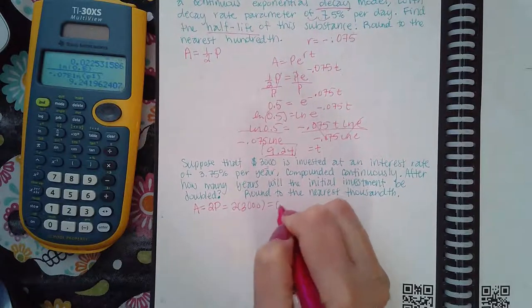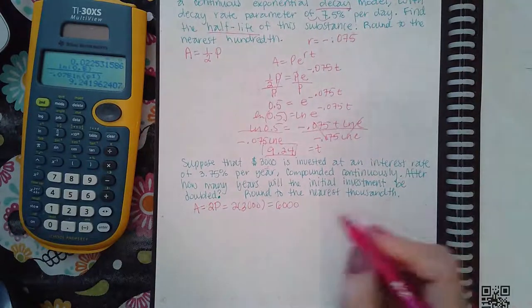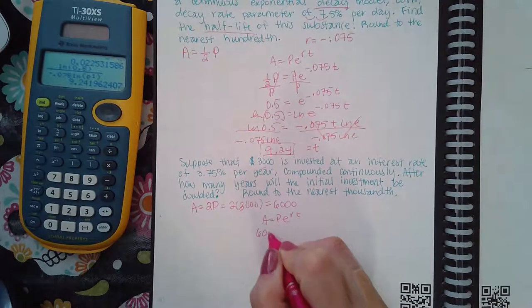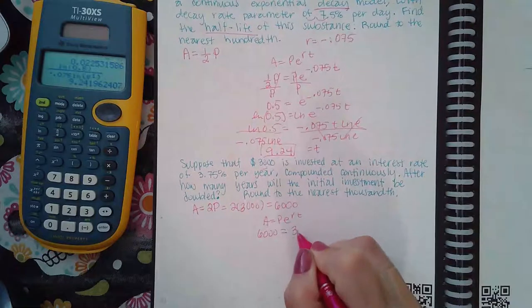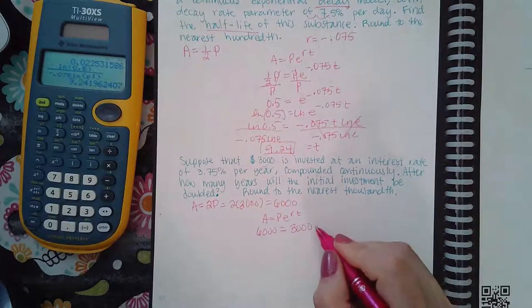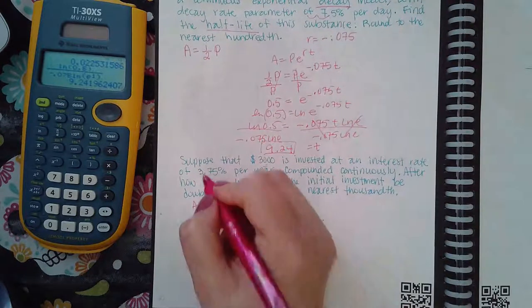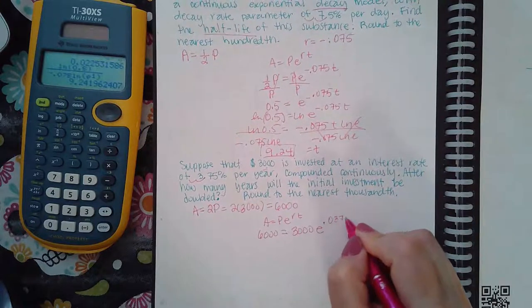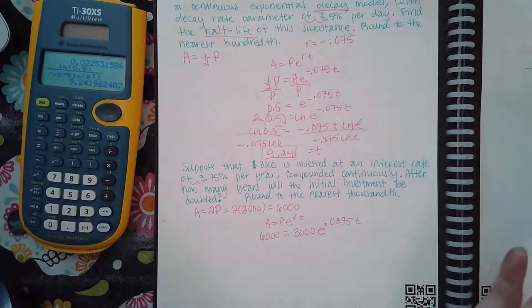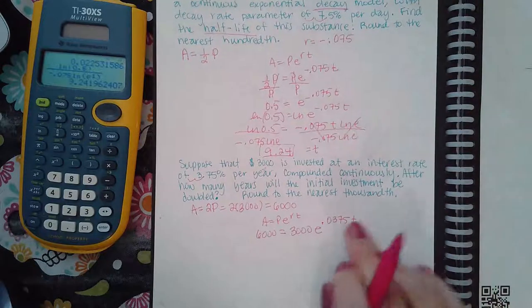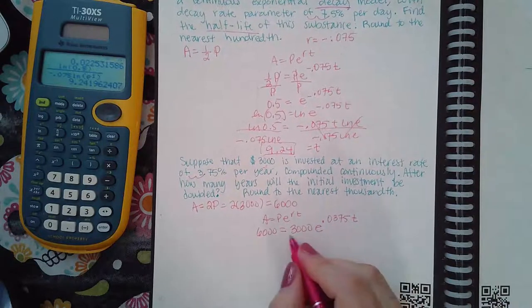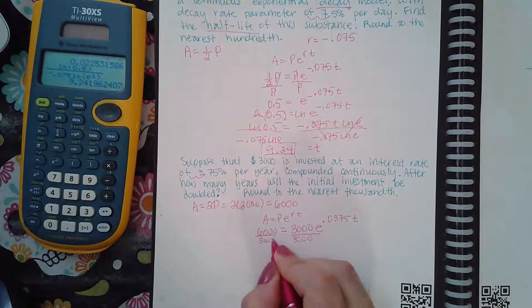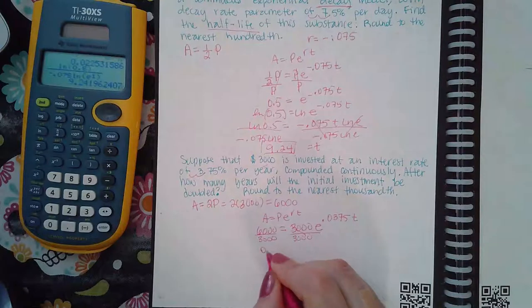So if I take my formula and I plug in the 6000 for A, which is double the amount that was put in, P is here. I'm going to use my rate 0.0375, and you are talking about money growing or doubling, so it is going to be a positive rate. If I divide by the 3000 on both sides, I get 0.5.